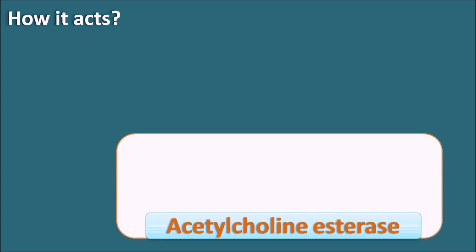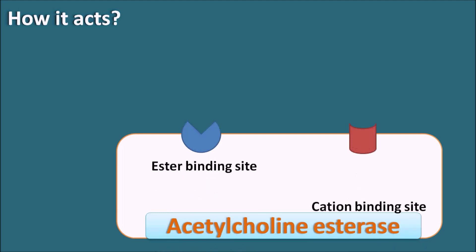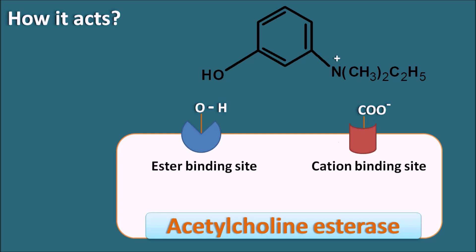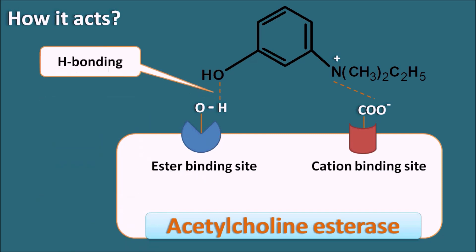How does Edrophonium act? It acts on the acetylcholinesterase enzyme, which has two important sites: the ester binding site and the cationic binding site. The ester binding site contains a serine amino acid with a side chain OH group, and the cationic binding site contains a glutamate amino acid with a carboxylate anion side chain. Edrophonium binds to the cationic binding site via ionic interaction of its quaternary ammonium group with the carboxylate anion, and the OH group of Edrophonium forms a hydrogen bond with the OH group of the serine residue, thereby blocking the catalytic site. Since the hydrogen bond is a weak bond, Edrophonium produces only short-term inhibition of the enzyme.